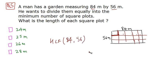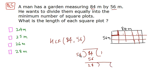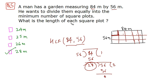Dividing 84 by 56: 56 × 1 = 56, remainder 28. Then dividing 56 by 28: 28 × 2 = 56, remainder 0. So the HCF of 84 and 56 is 28. Hence our answer is 28 meters — the maximum side length of a square plot for a garden measuring 84 by 56 meters.